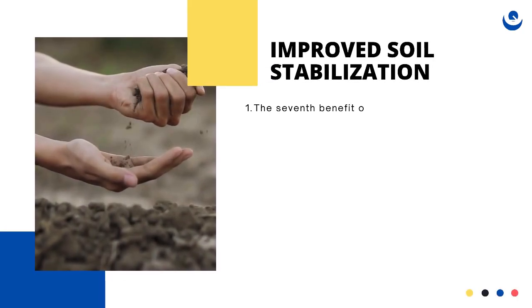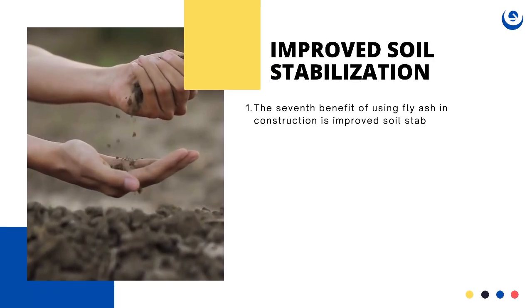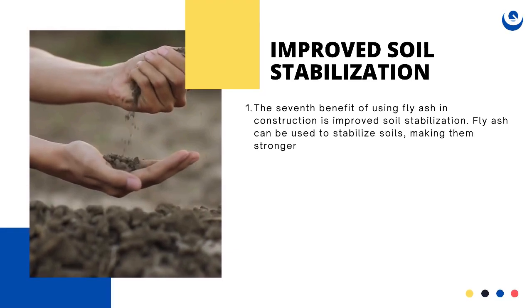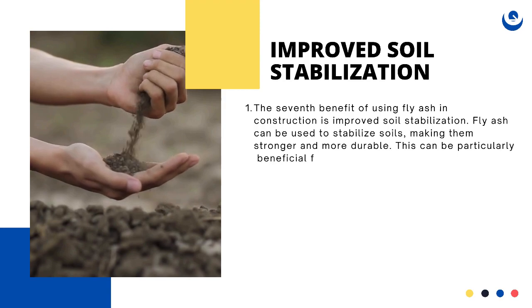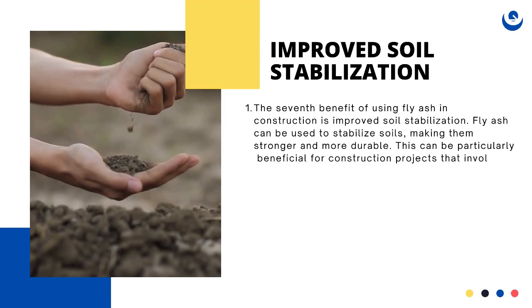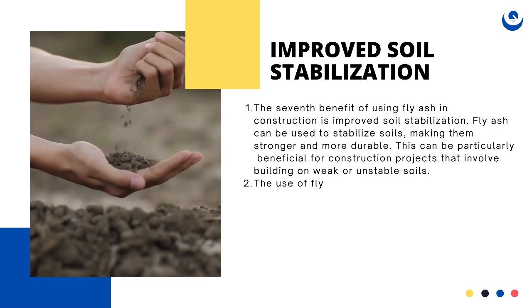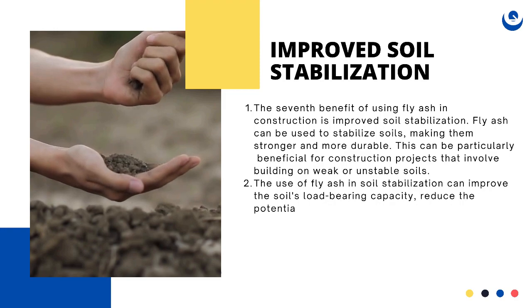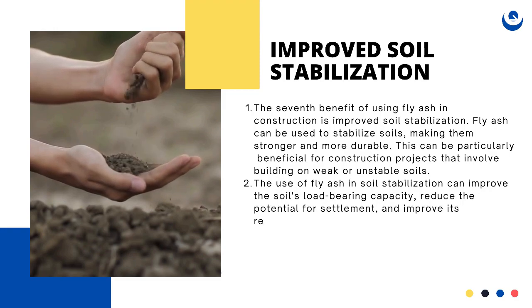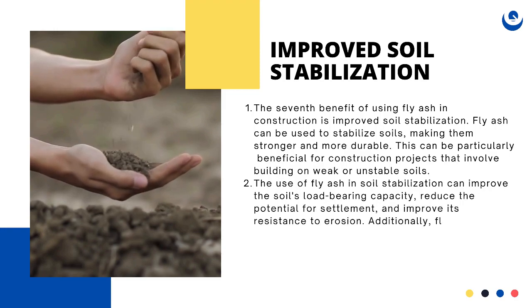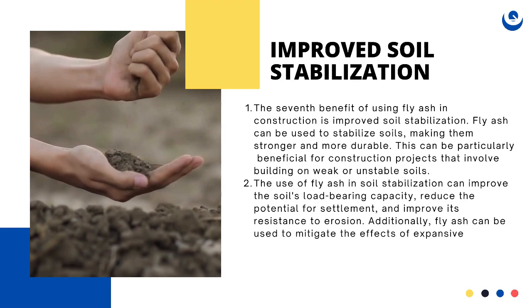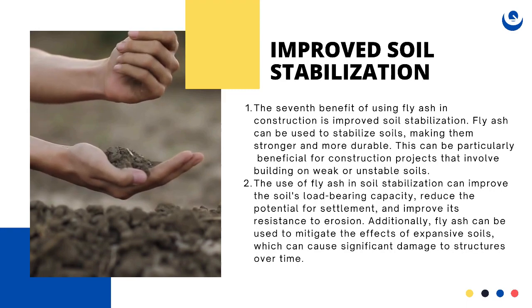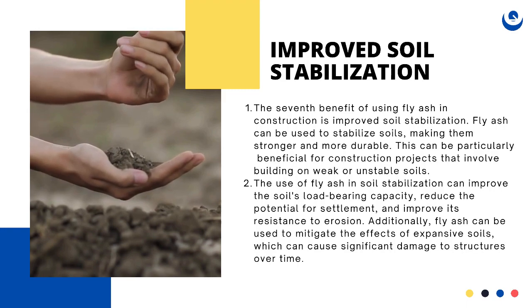Improved soil stabilization: The seventh benefit of using fly ash in construction is improved soil stabilization. Fly ash can be used to stabilize soils, making them stronger and more durable. This can be particularly beneficial for construction projects that involve building on weak or unstable soils. The use of fly ash in soil stabilization can improve the soil's load-bearing capacity, reduce the potential for settlement, and improve its resistance to erosion. Additionally, fly ash can be used to mitigate the effects of expansive soils, which can cause significant damage to structures over time.